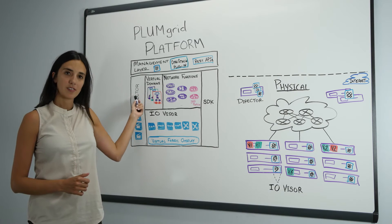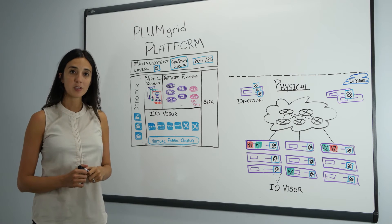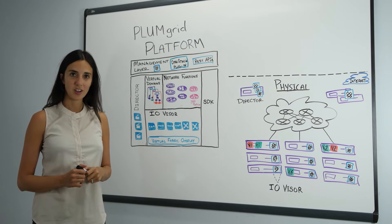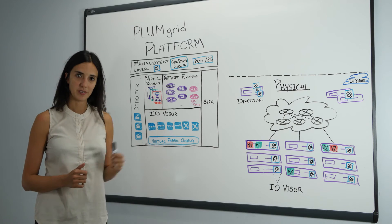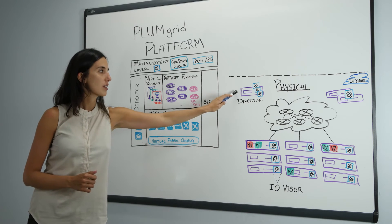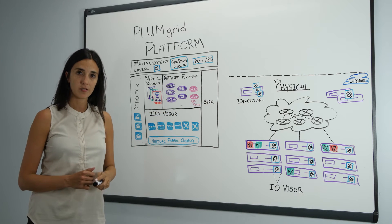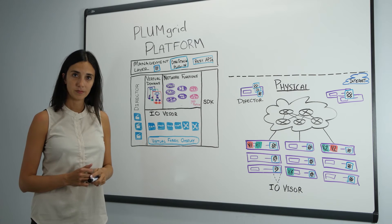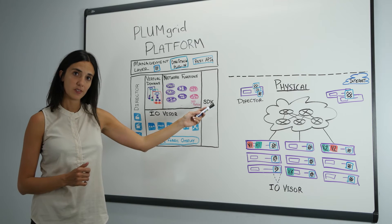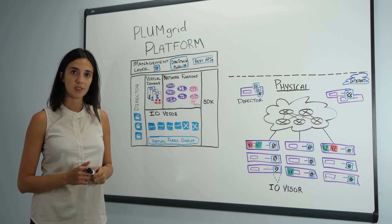The director cluster is the brain of the PlumGrid platform. It is responsible for managing and coordinating all the different components. The director cluster is usually deployed as a cluster of x86 servers. It is highly available, hence tolerating failure of one of the components, and it allows for growth of the environment with its ability to scale out.